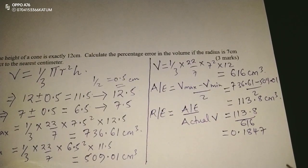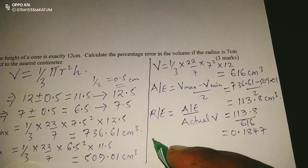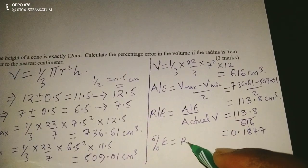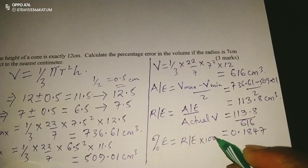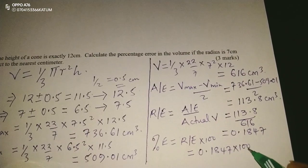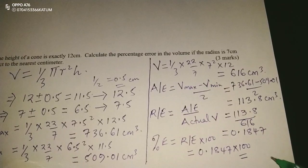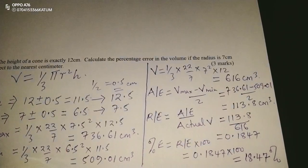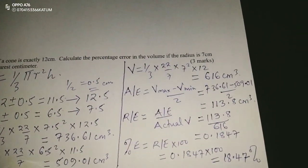Finally, the percentage error is given by relative error times 100. So 0.1847 × 100 gives us 18.47%. That is how we get the percentage error in the volume of this cone.